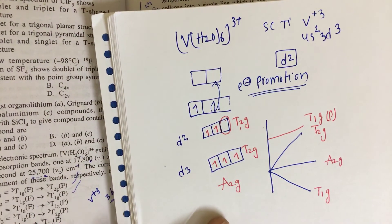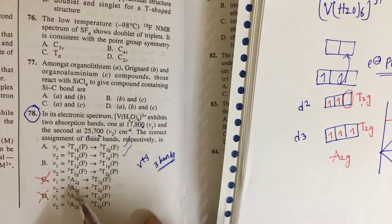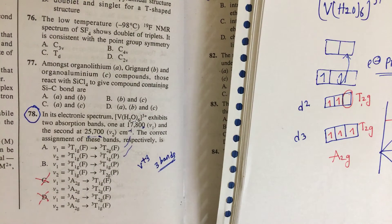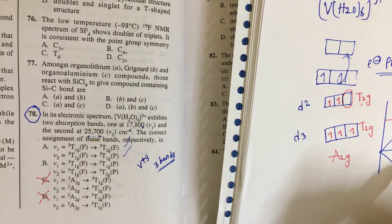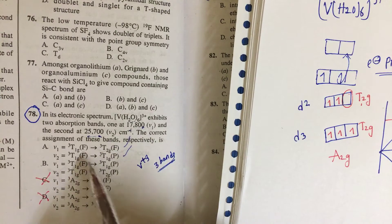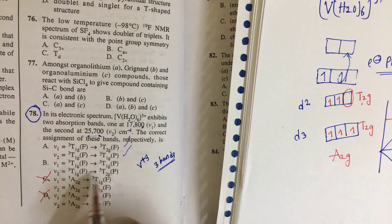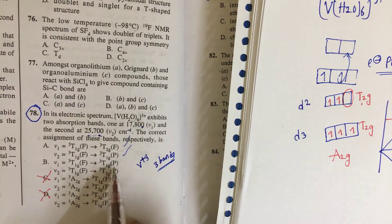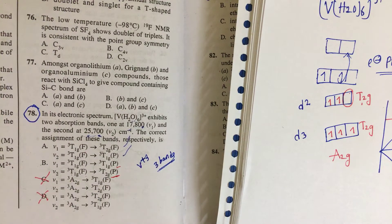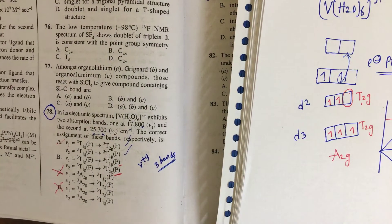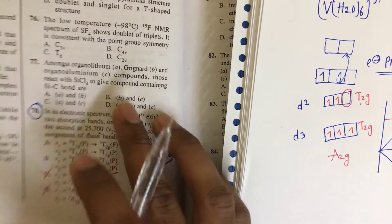We can eliminate options where A₂g is listed as the ground state. The remaining options are ³T₁g(F)→³T₂g and ³T₁g(F)→³T₁g(P). Since ³T₂g(P) does not exist, the answer is option A: transitions from ³T₁g(F) to ³T₂g and ³T₁g(P). I have made a video on electron promotion and hole inversion — please go through it.